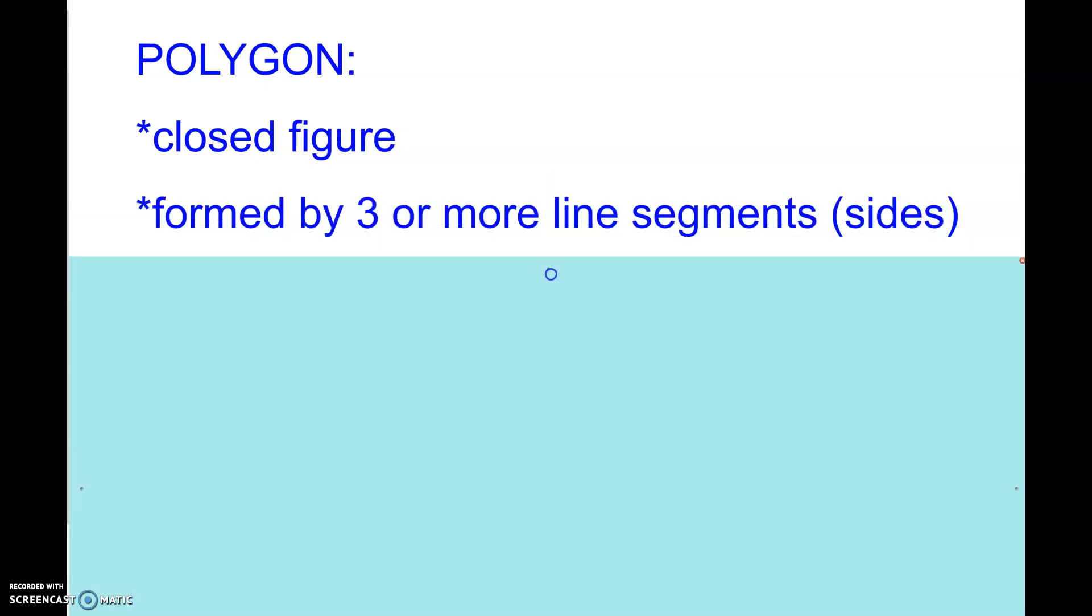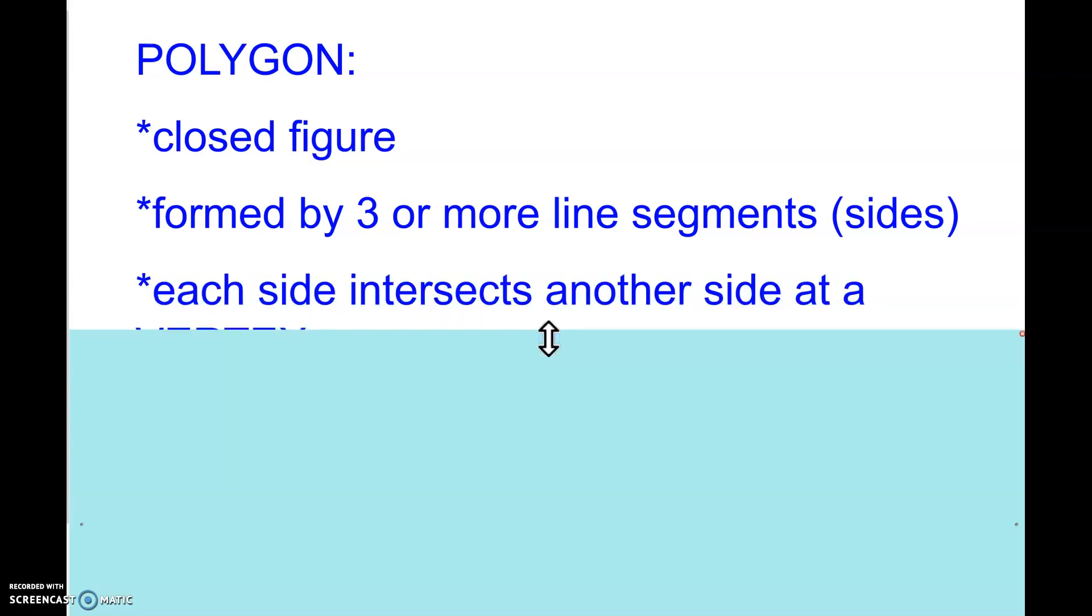Alright, so what is a polygon? So think in your heads, what do you think a polygon is? So there's some characteristics that we always must use when we're talking about a polygon. One of those things is that it is a closed figure. It cannot be open. All of the sides need to meet. It is formed by three or more line segments, which we call sides. And each side intersects another side at what we call a vertex.